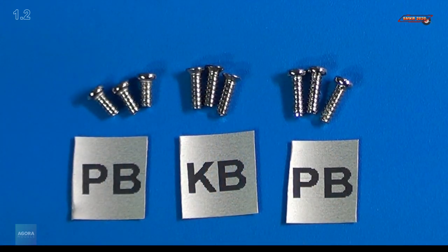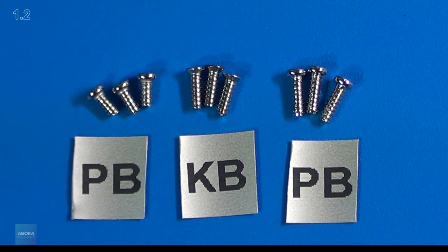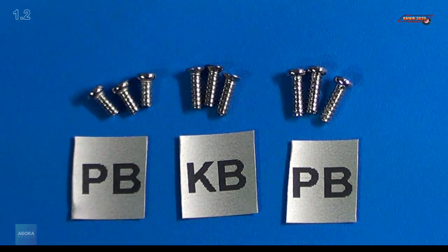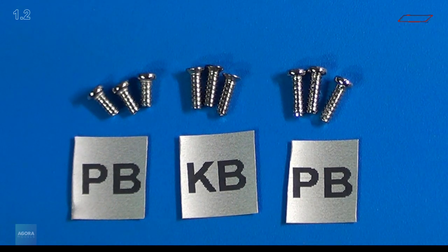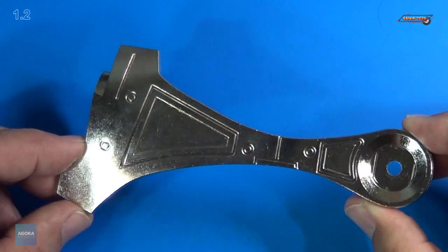Here's a close-up of the screws. You can see we have two different types of PB screws. We have the two by six PB screws, and then we have the two by four PB screws. Now we also have a two by six KB screw. I'm going to go ahead and put this aside because I'm not going to use it for this stage.